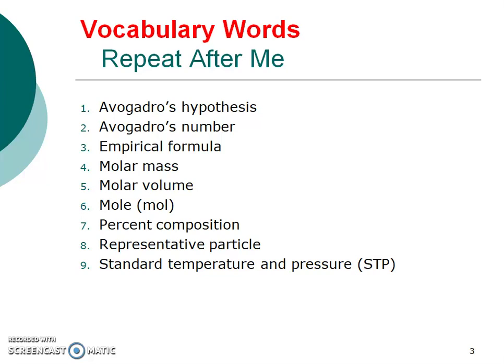Avogadro's hypothesis. Avogadro's number. Empirical formula. Molar mass. Molar volume. Mole — and yes, it's abbreviated M-O-L; they just kick off the E. Percent composition. Representative particle. Standard temperature and pressure — and yes, it's abbreviated as STP.